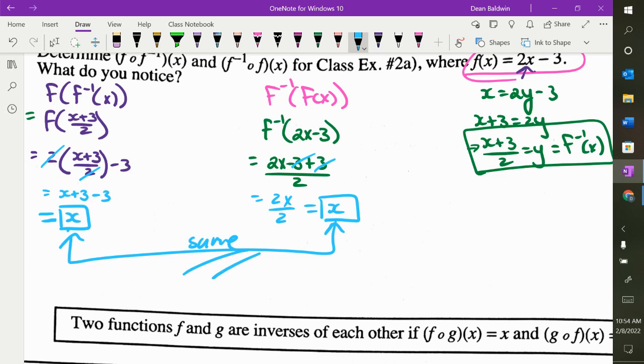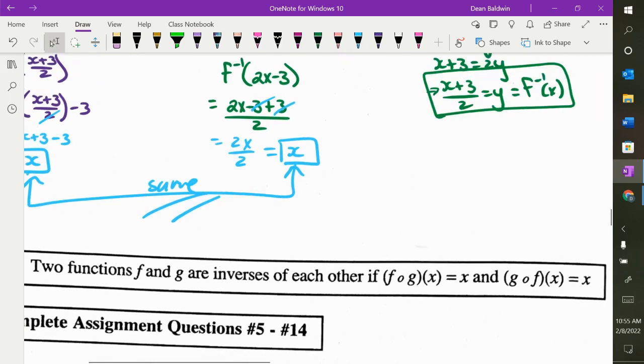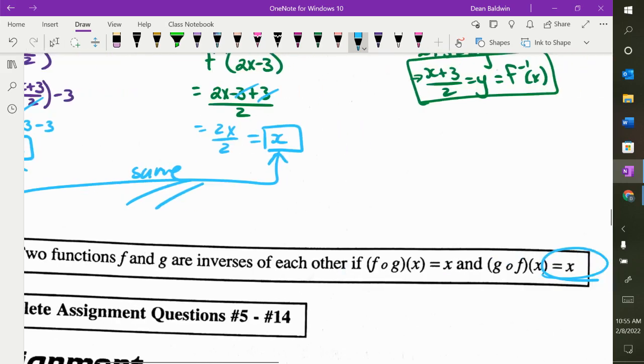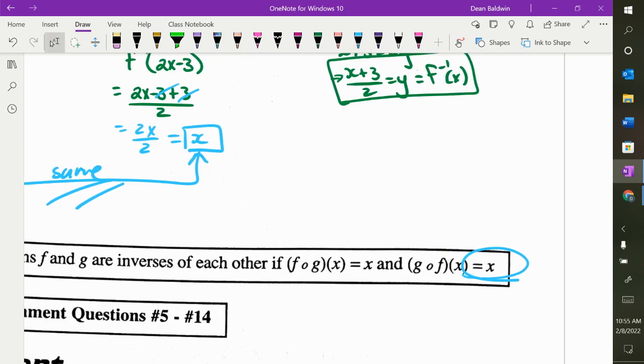It doesn't matter what the functions are. If you put the inverse into the original function or the original function into the inverse, it's irrelevant what the 2 functions are. It always equals x. Always, always, always. So on your test, every year, I will give a question and I'll make it... I'll say f of x is equal to 2x to the 5th plus x squared plus 1. And I'll say, do this. Figure out what this is.